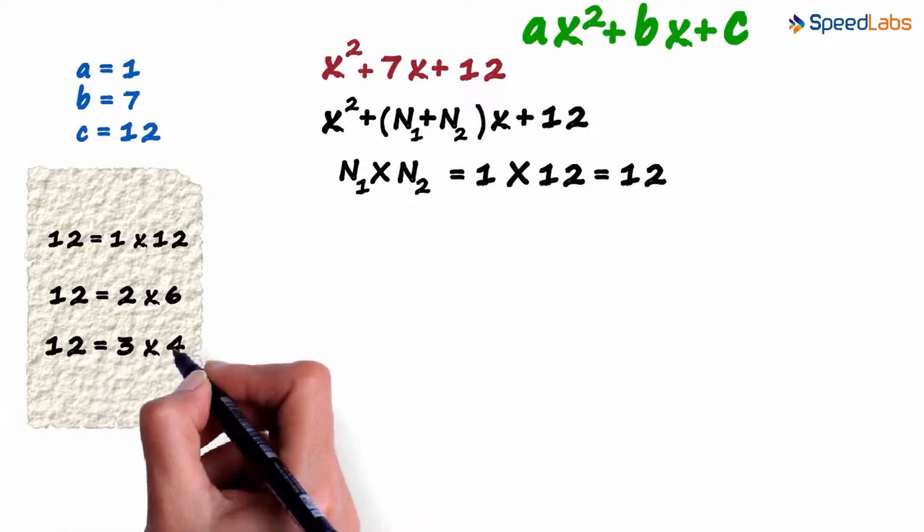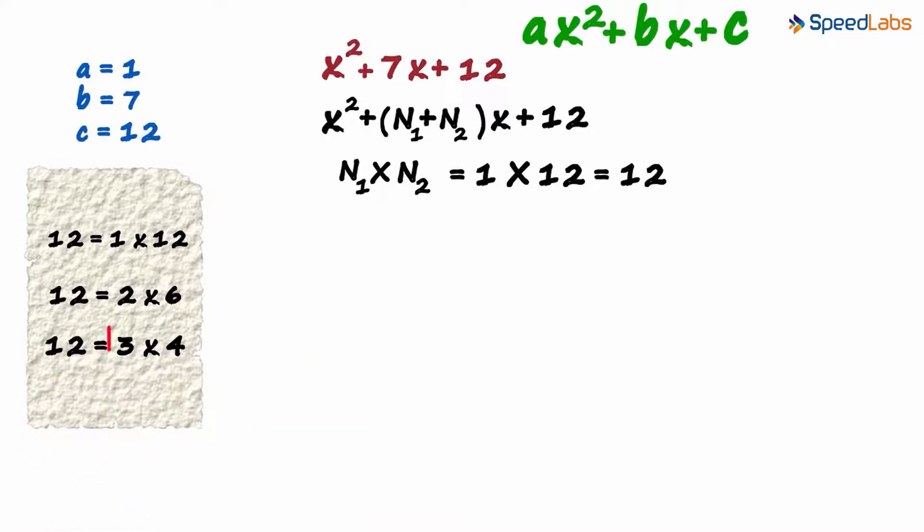12 equals 3 times 4. And yes, the sum of 3 and 4 is 7. These were the two numbers we were looking for.